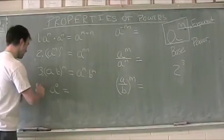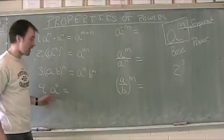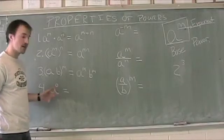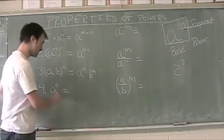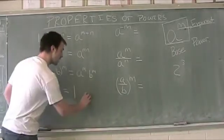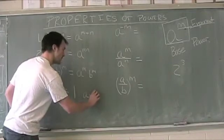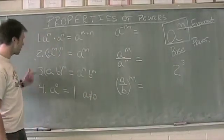Finally, in this first row here, property number four, we have a zero exponent property. Any time a, our base, is raised to the zero exponent, it's going to be one, as long as a does not equal zero. So there are our first four.